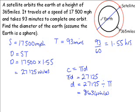Now the question is asking us to find the diameter of the Earth, not the path of the satellite. We know, however, that this distance here is 365 miles, and this distance here is 365 miles.